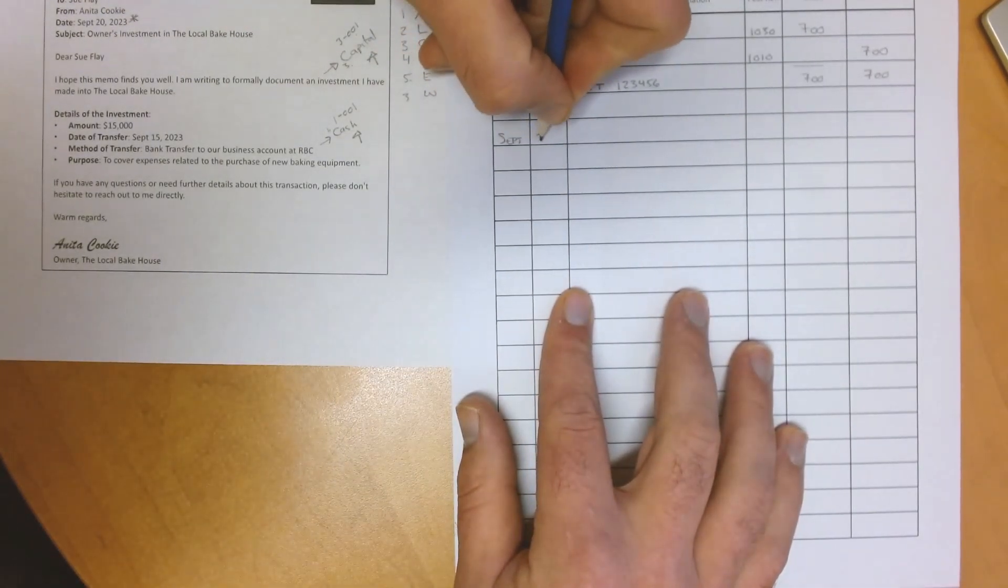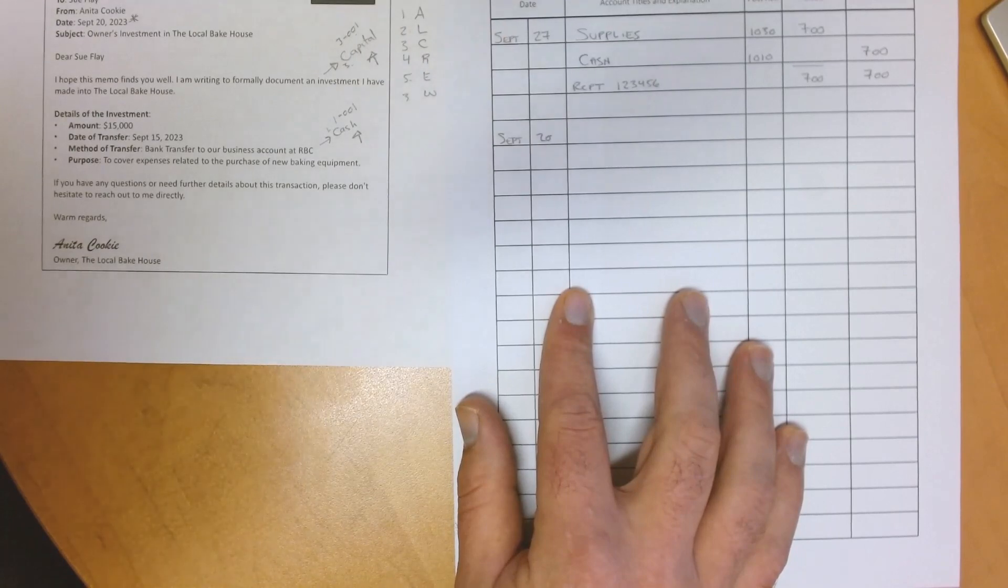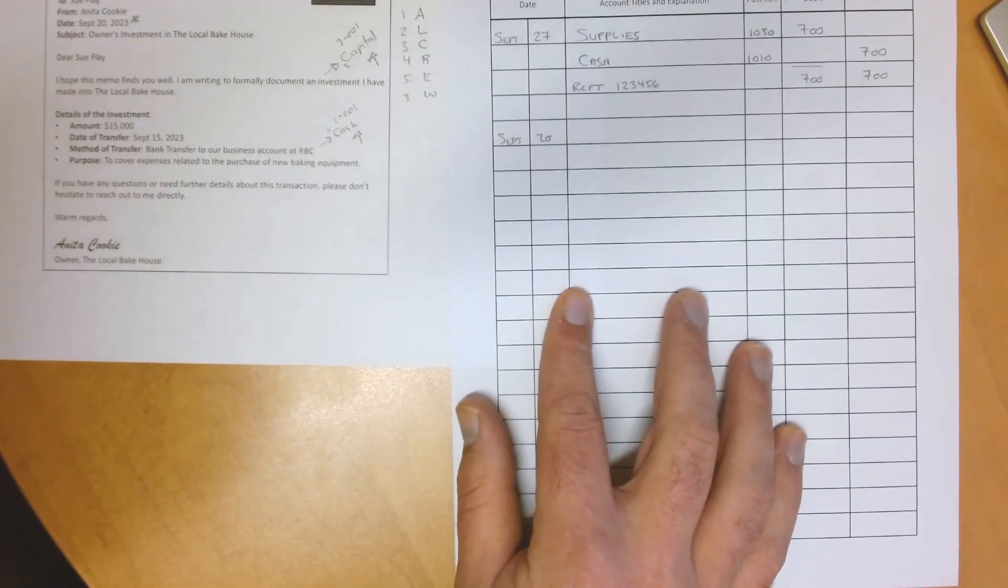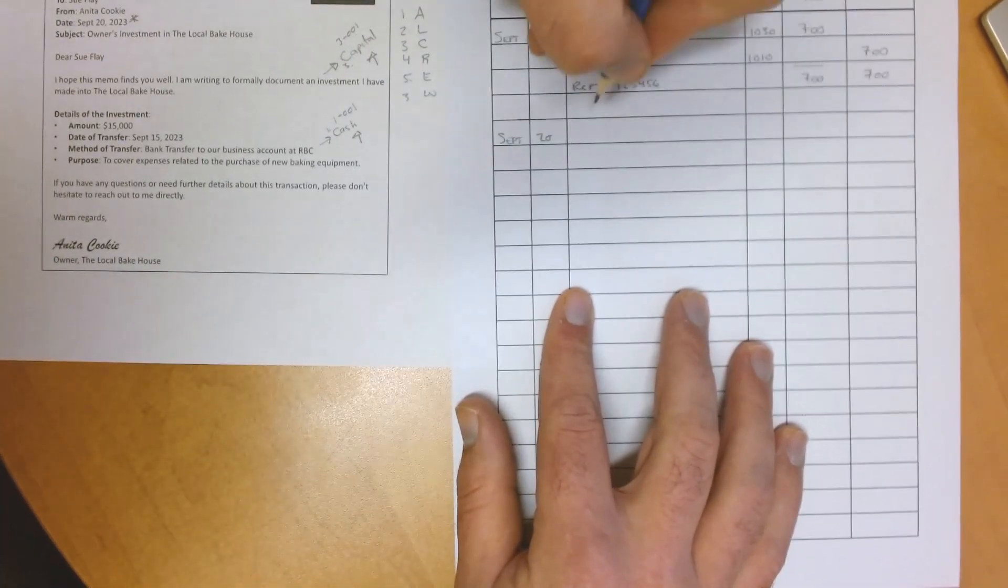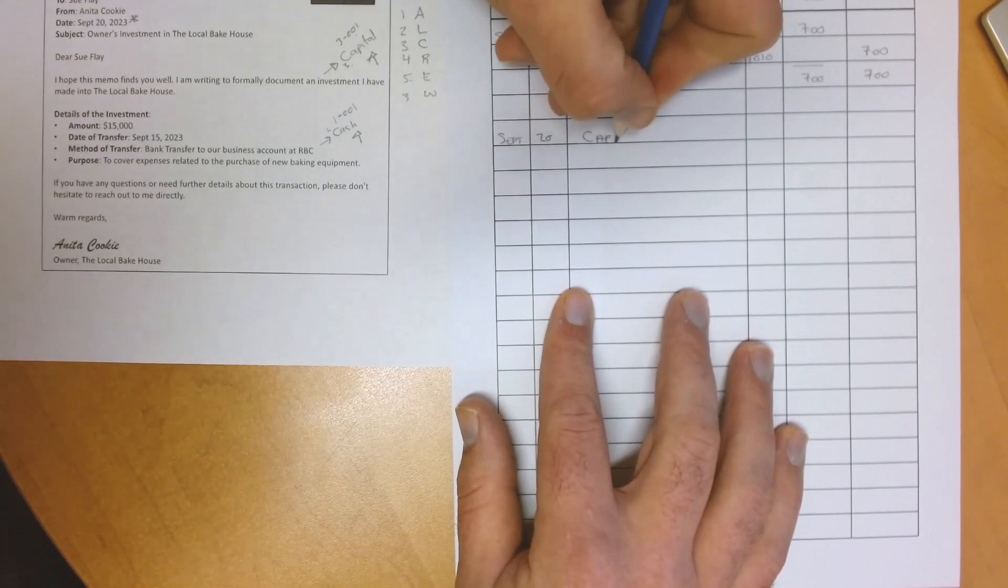Should we have written this in a T-account before going ahead and journalizing? Let's take a look at the general journal entry. Write down the date and add the entries as discussed.